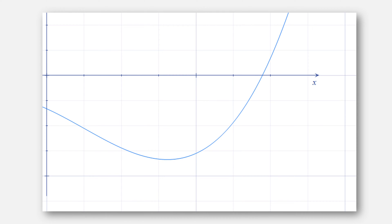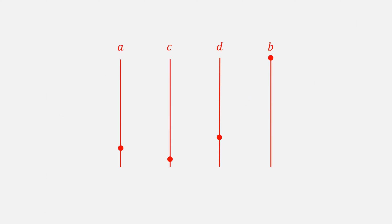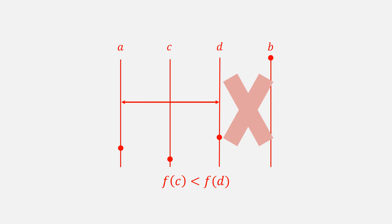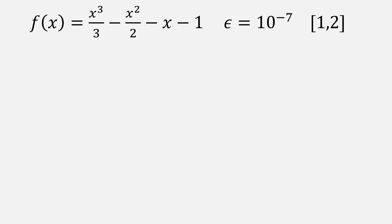Visually, it looks something like this. We have an interval a and b that's much larger than our small testing epsilon. We compute c and d, then check if f(c) is less than f(d). In this case it is, so we'll eliminate our third interval and replace d with b. Then repeat the process, computing a new value for c and a new value for d.